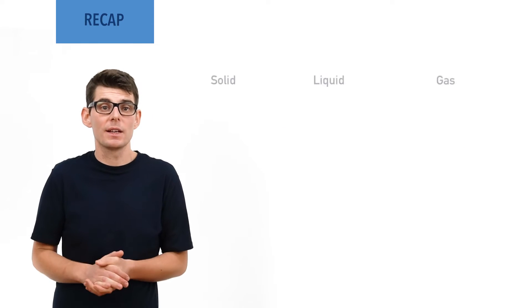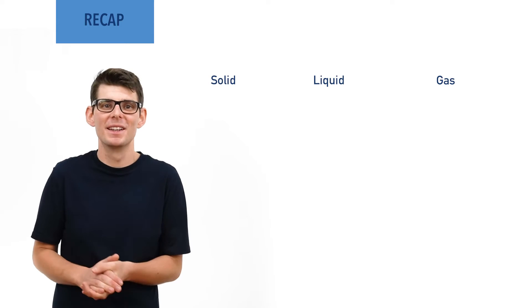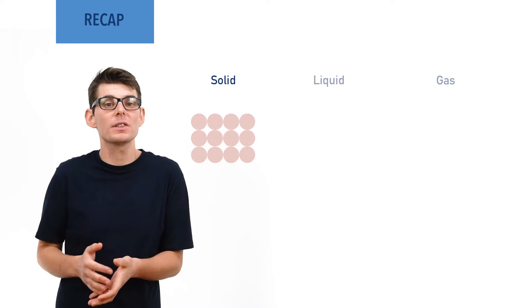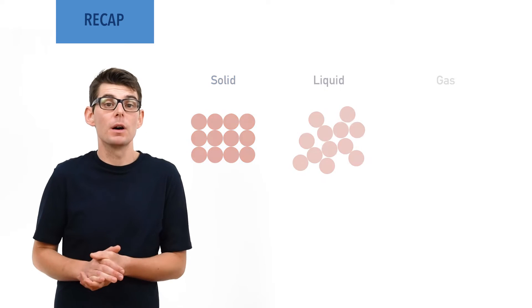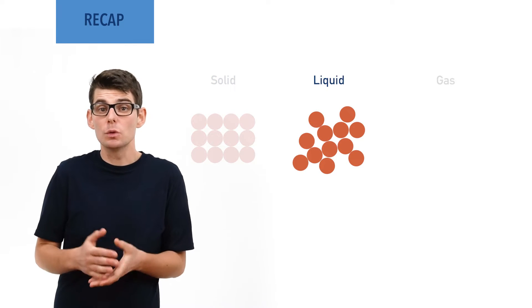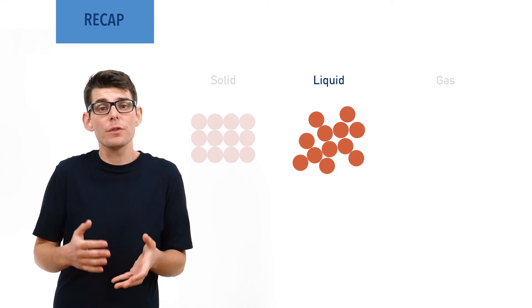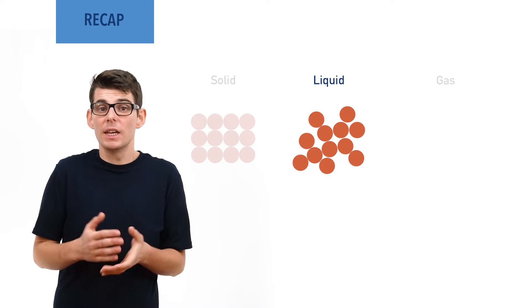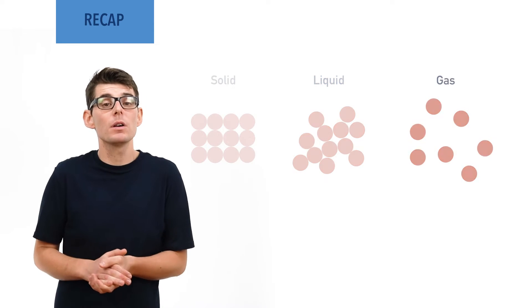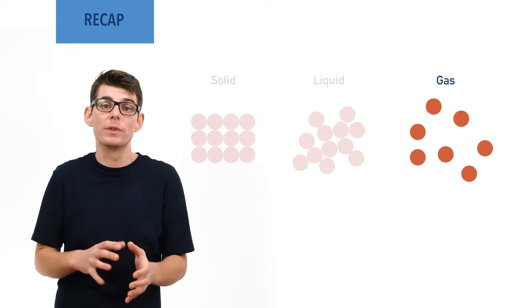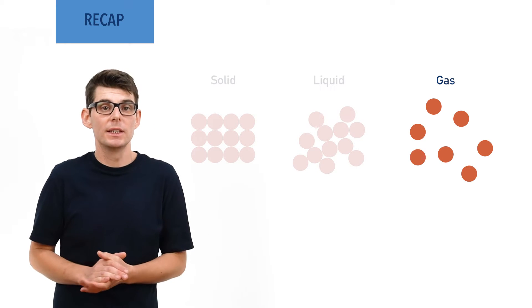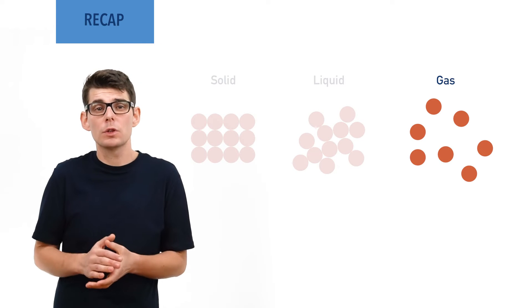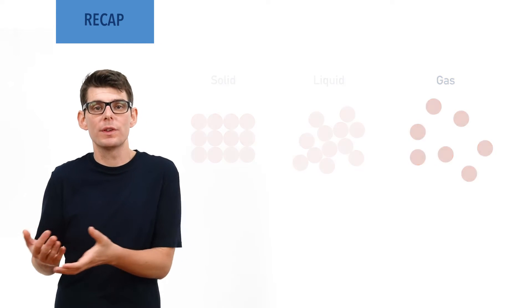Substances can exist in three states: solids, liquids, and gases — ignoring plasma here. In solids, particles are close together and in fixed positions. In liquids, particles are further apart and, although still touching each other, are free to move around. In gases, particles are constantly randomly moving in all directions and can exist anywhere within their container. A group of gas molecules will always spread out to fill their container.